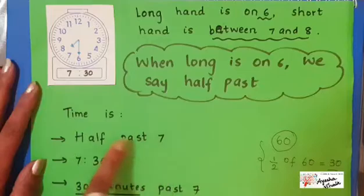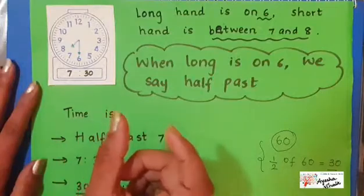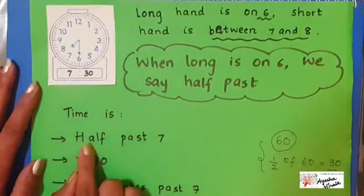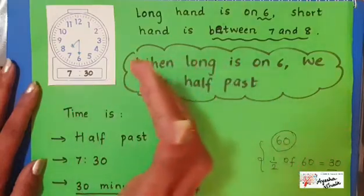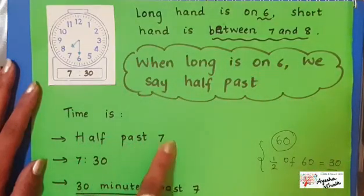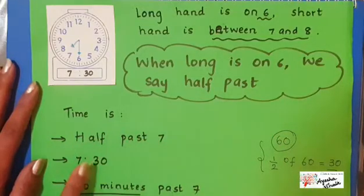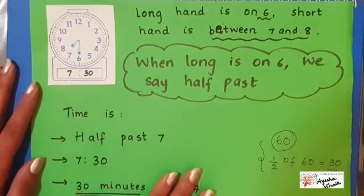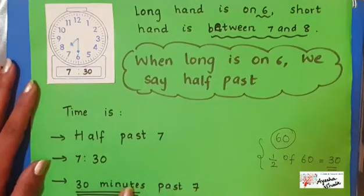You must have noticed that we write 'half past' before the number 7, unlike o'clock which comes at the end — like 6 o'clock, 2 o'clock, 3 o'clock. Half past comes before the number, like half past 7, half past 12, half past 3. So how do we write half past 7? We write it as 7:30. And the third way of writing the time is 30 minutes past 7.